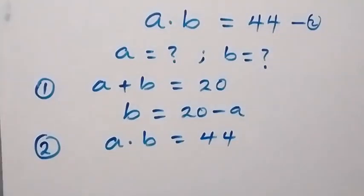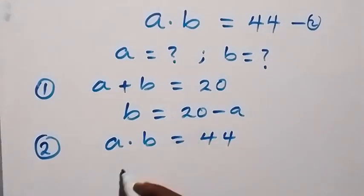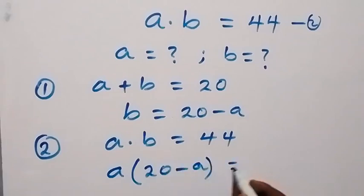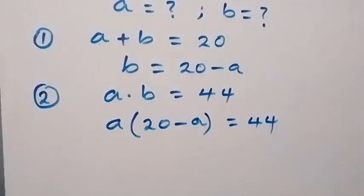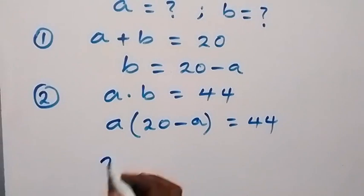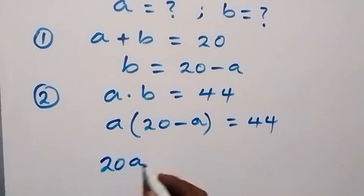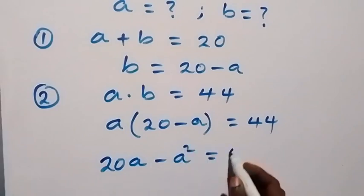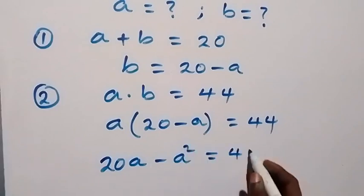Then we can substitute the value of B back into equation 2, and that will be A times 20 minus A, then equals to 44 on this side.